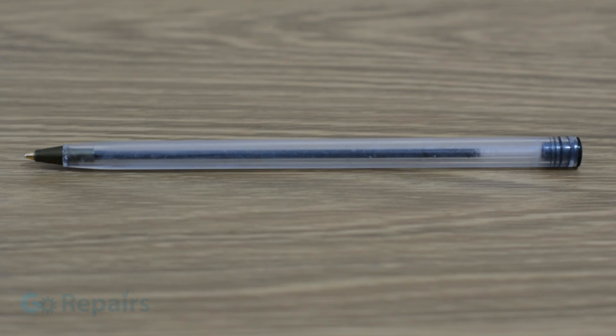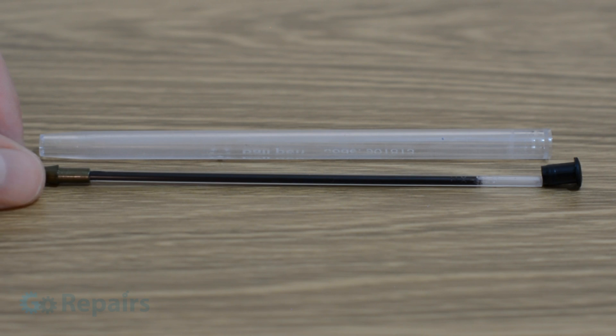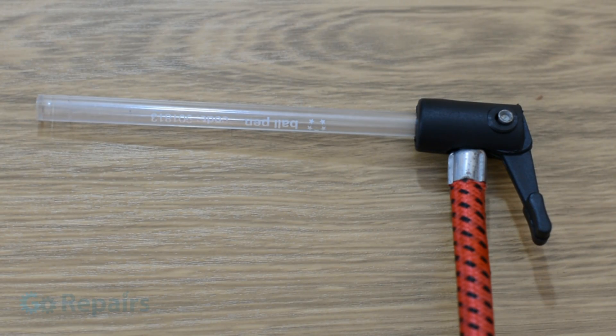Then we're going to take an ordinary ballpoint pen and strip it down so we just have the tube. I'm using this because it fits my pump attachment.